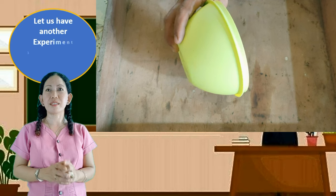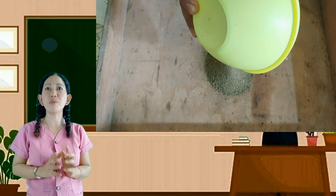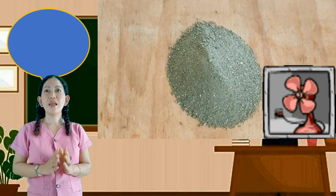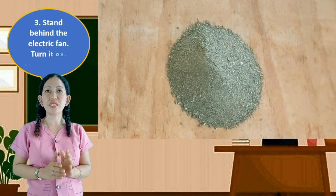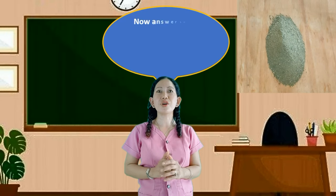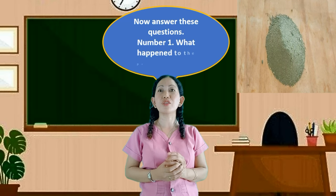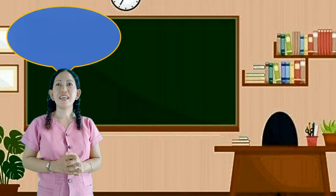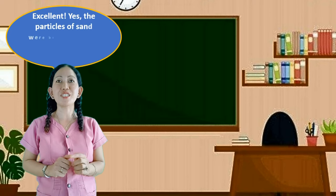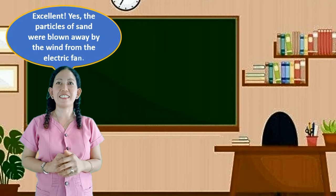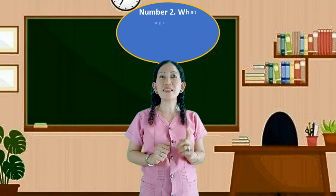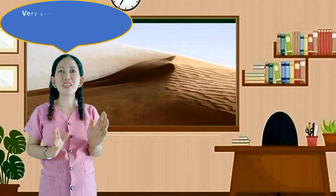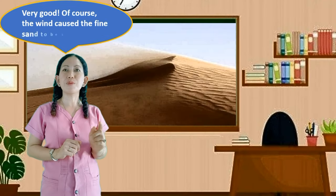Let us have another experiment. Put some dry fine sand in a wooden box. Put the box on the floor beside an electric fan. Stand behind the electric fan, turn it on, then observe. What happened to the particles of sand? The particles of sand were blown away by the wind from the electric fan. What agent of weathering caused the fine sand to be blown away? The wind caused the fine sand to be blown away.